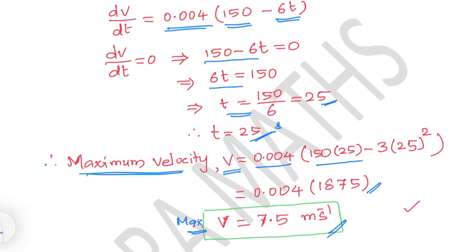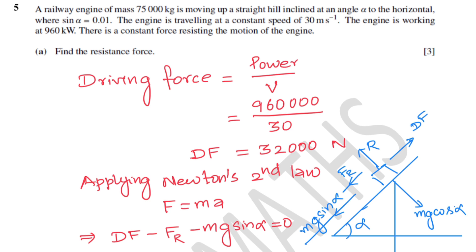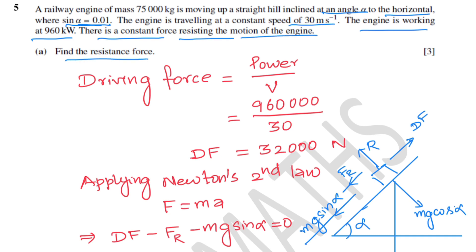Question five. A railway engine of mass 75,000 kilograms moves up a straight hill inclined at angle alpha where sin alpha equals 0.01, travelling at a constant speed of 30 meters per second, working at 960 kilowatts. Driving force equals power divided by velocity: 960,000 over 30 equals 32,000 newtons.